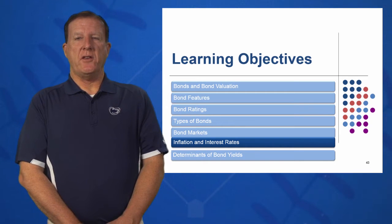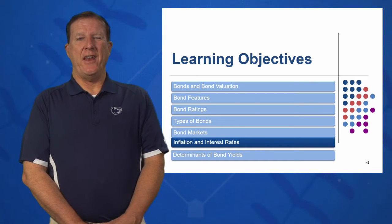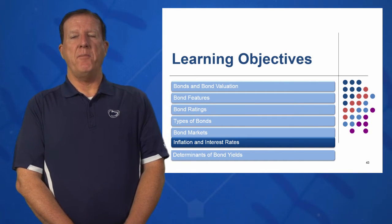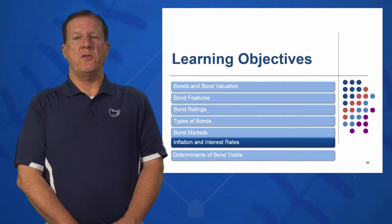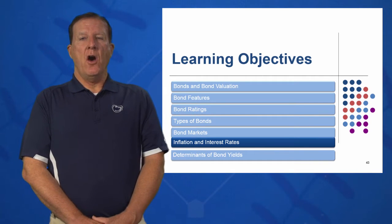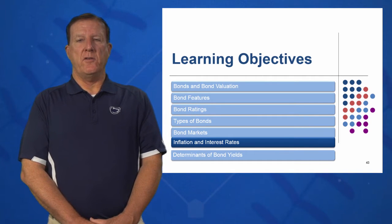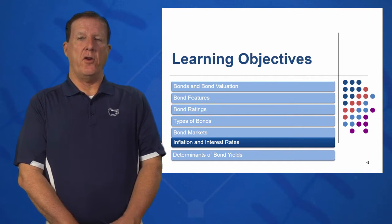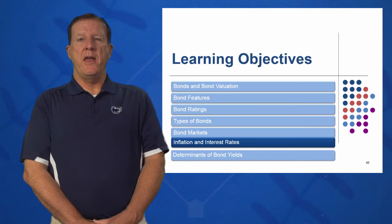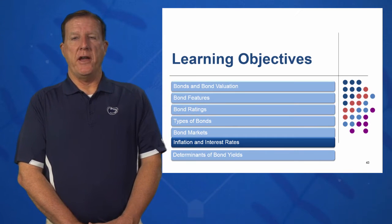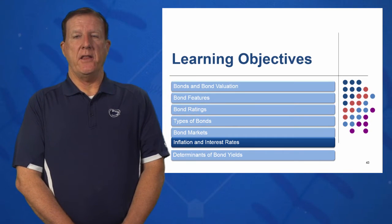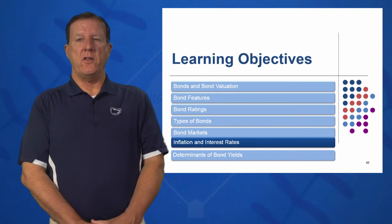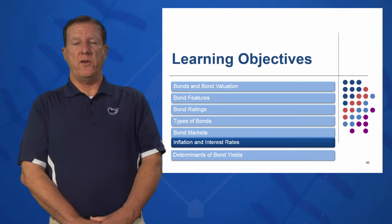In learning objective 6, we're going to look at inflation and interest rates and what kind of impact do interest rates have on bond prices. Generally, when interest rates go up, bond values go down. So if you're holding a bond and you're in need of selling it in the short term, you want to pay very, very close attention to interest rates.